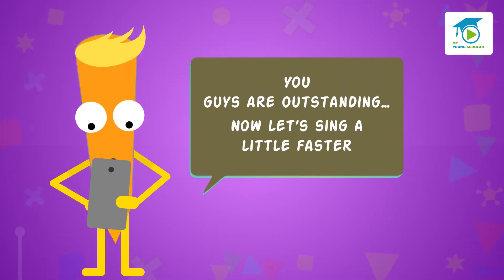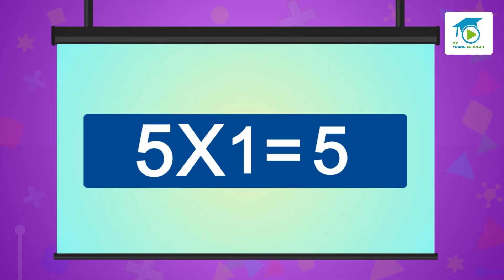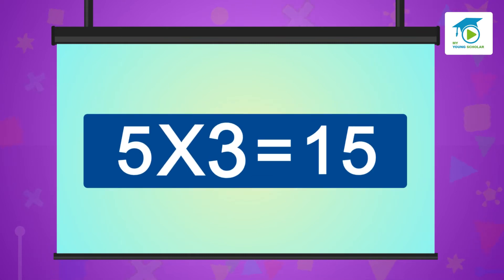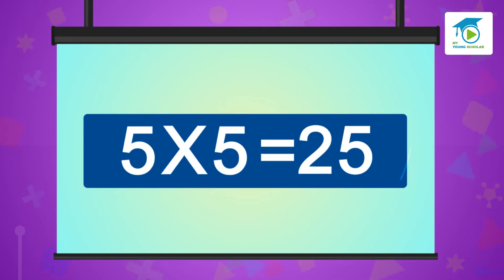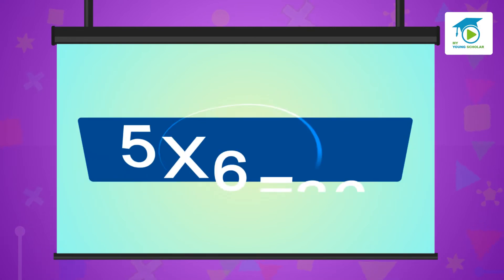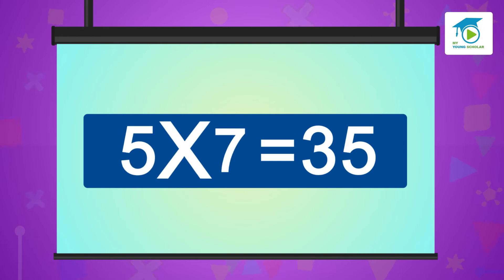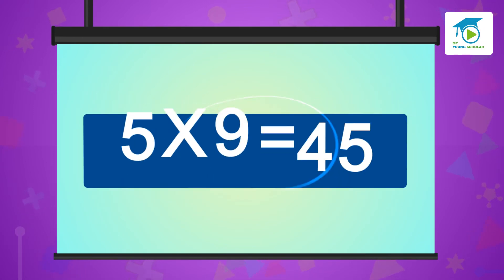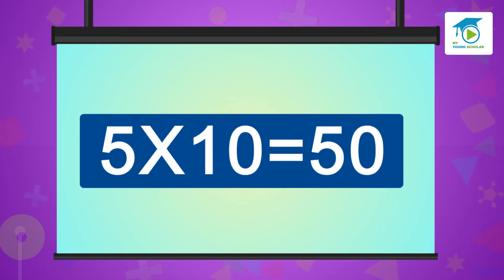Now let's sing a little faster. Five ones are five, five twos are ten, five threes are fifteen, five fours are twenty, five fives are twenty-five, five sixes are thirty, five sevens are thirty-five, five eights are forty, five nines are forty-five, five tens are fifty.